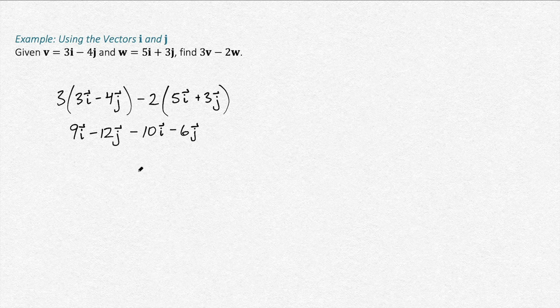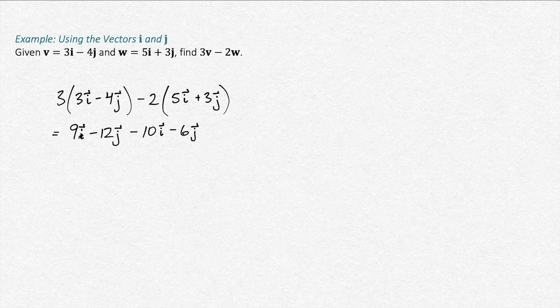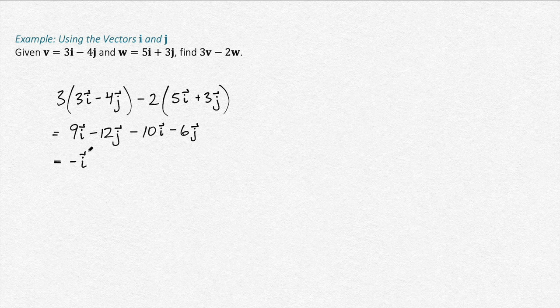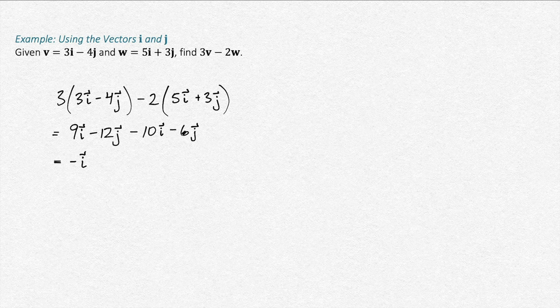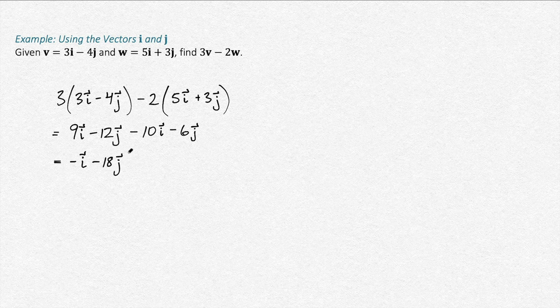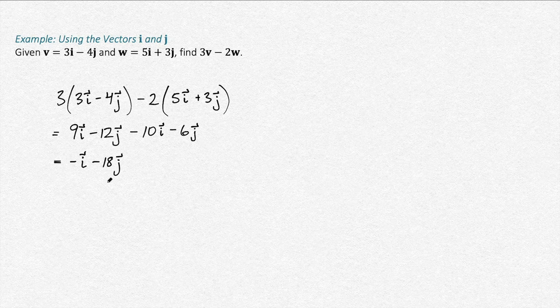And then combine like terms. Right? 9i minus 10i is negative 1i. Negative 12j minus 6j is minus 18j. And so that there is our 3v minus 2w. Good to see you guys!